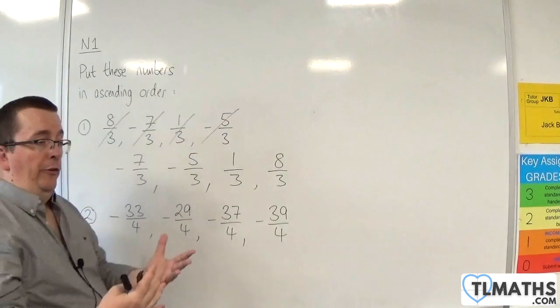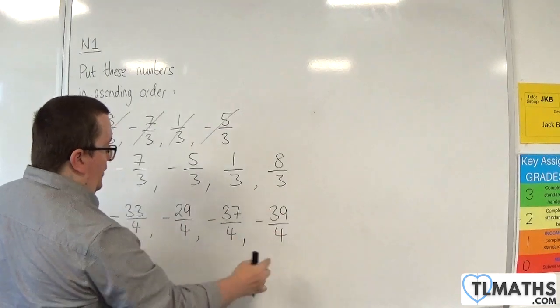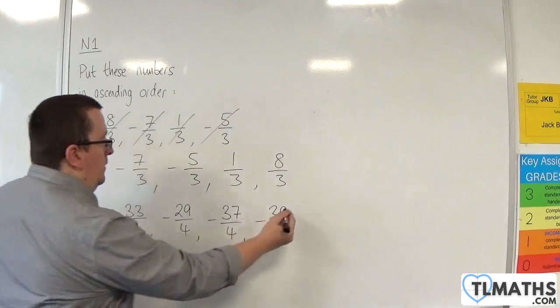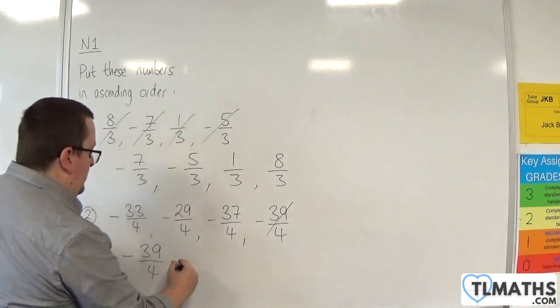So the most negative is the minus 39. So minus 39 quarters comes first. Then we'll have the minus 37 quarters.